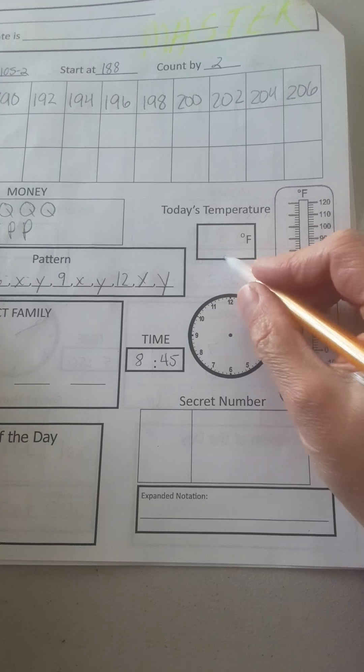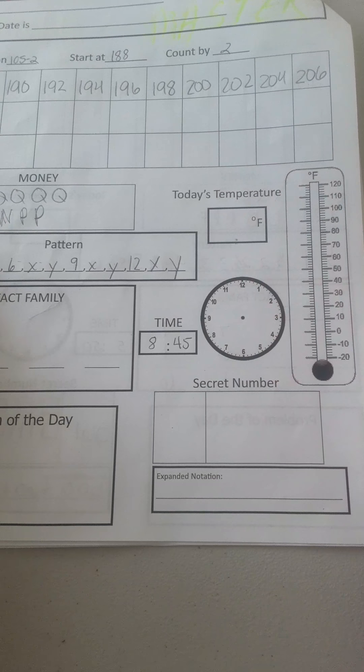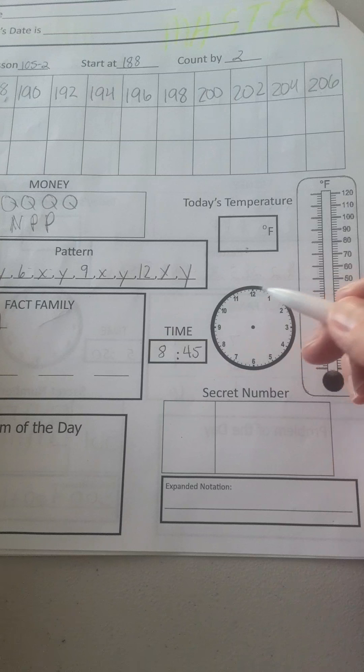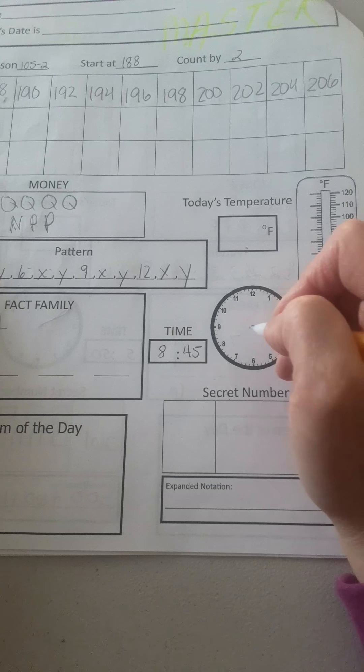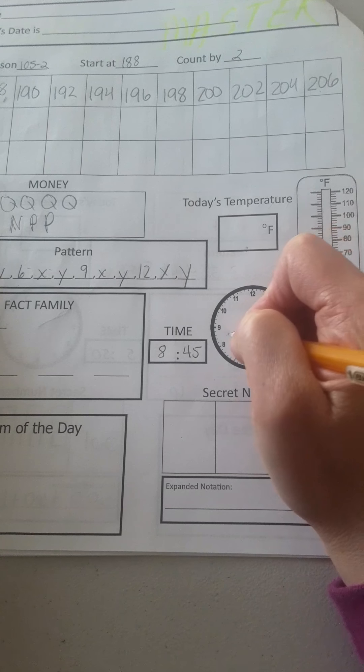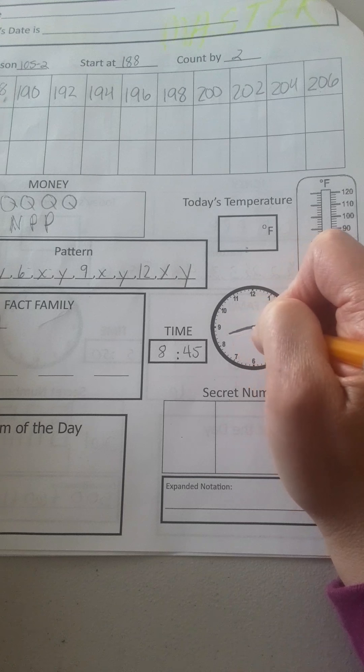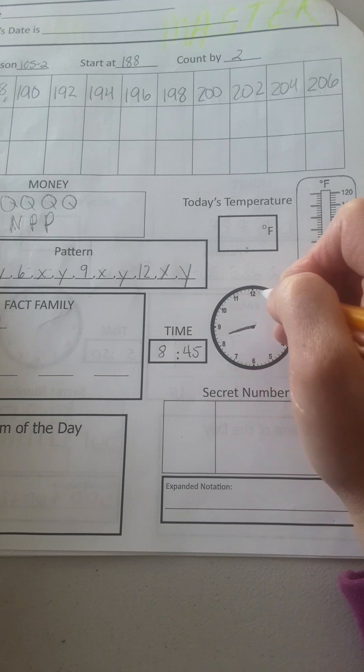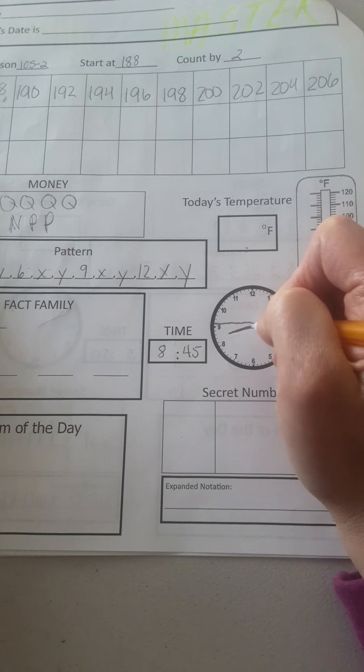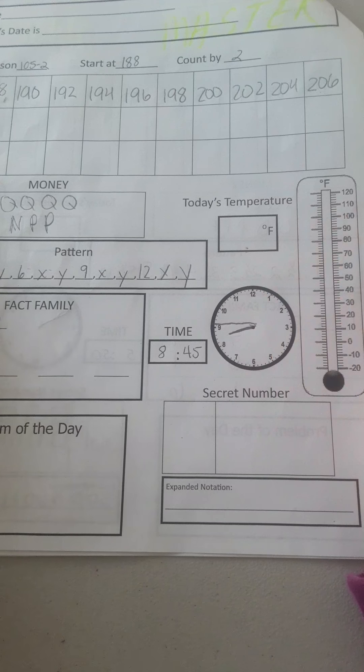Okay, do today's temperature. Let's go down to the time. The time is 8:45. So I know it's going to be in between the 8 and the 9 by our hand in 45. 5, 10, 15, 20, 25, 30, 35, 40, 45. That is my time of 8:45.